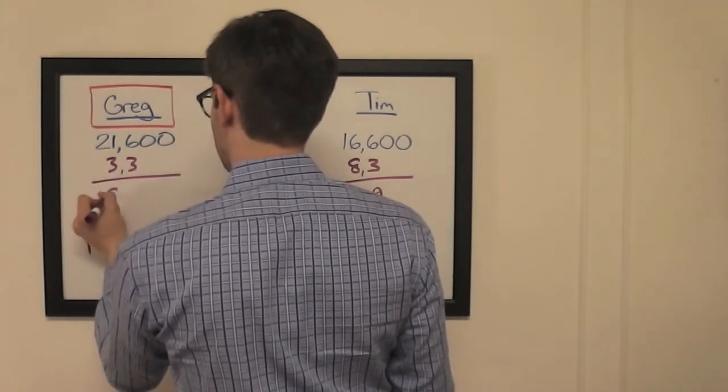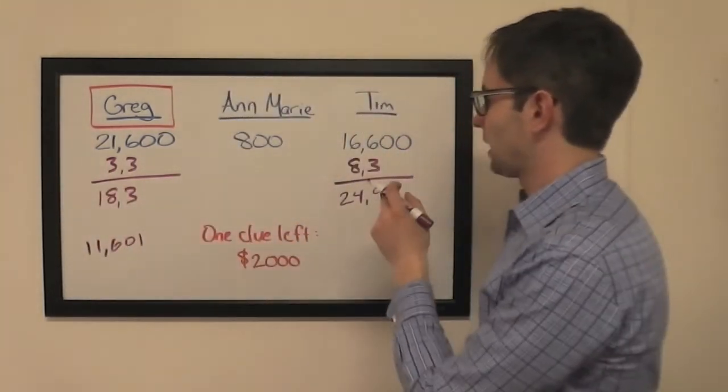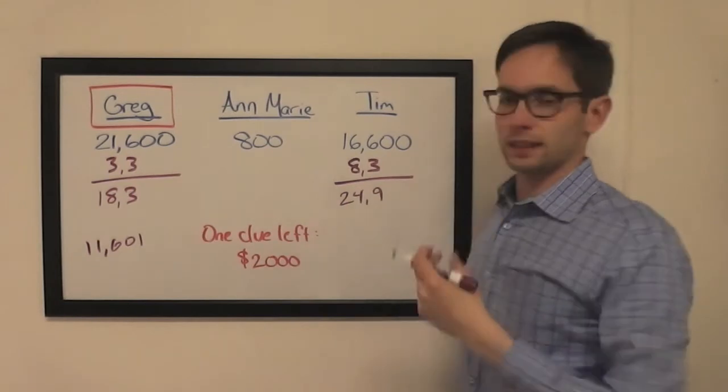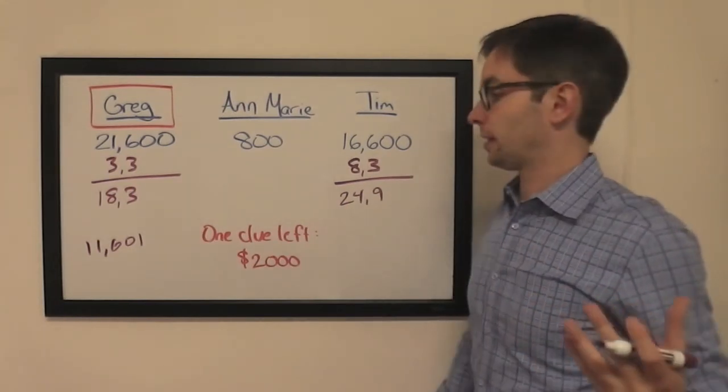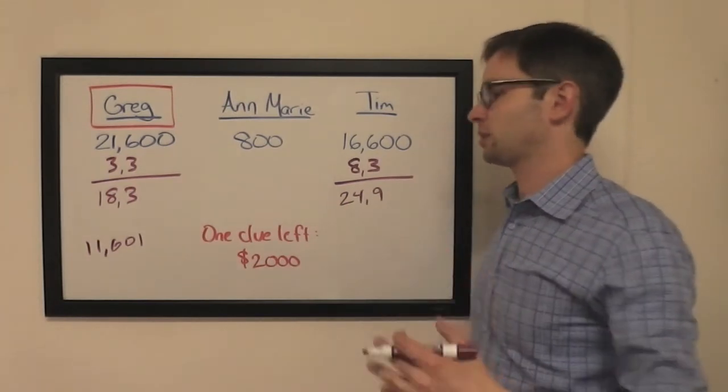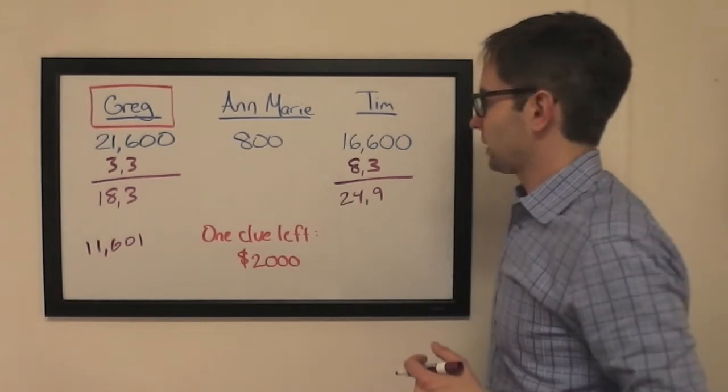If he's wrong with that total, he's going to have $1,800. Still in the lead. There is the risk that Tim could get the $2,000 clue right and pass him, but really, what are the odds? Probably not that great.